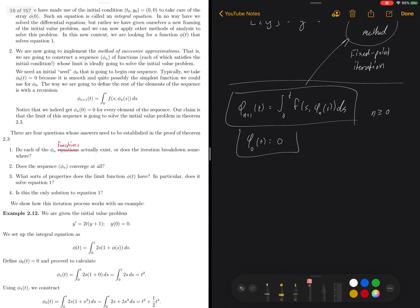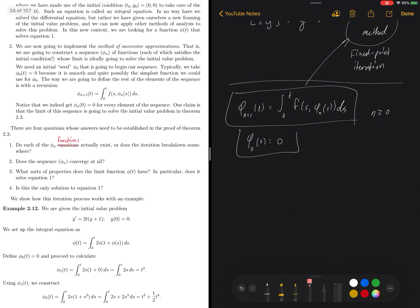Not an indexed φₙ, but φ itself. What sorts of properties does that limiting function have? And in particular, does it solve the equation?